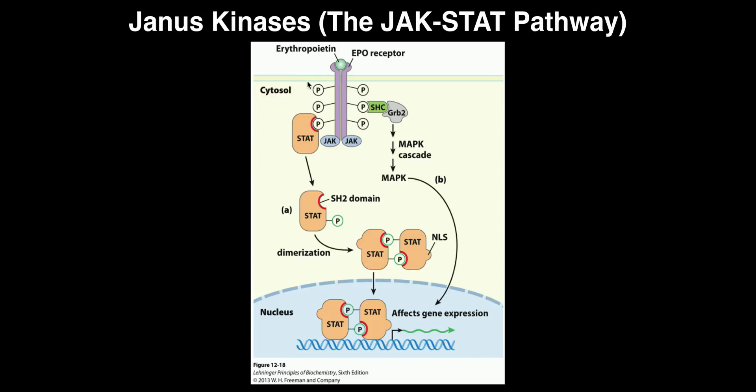Once the STATs dimerize, they go into the nucleus and affect gene expression — most likely by upregulating certain genes, although they can also repress others. In the case of erythropoietin, these STATs are most likely going to upregulate genes involved in polycythemia — increased hematocrit, synthesis of red blood cells, and so on — since that's what erythropoietin's function is.